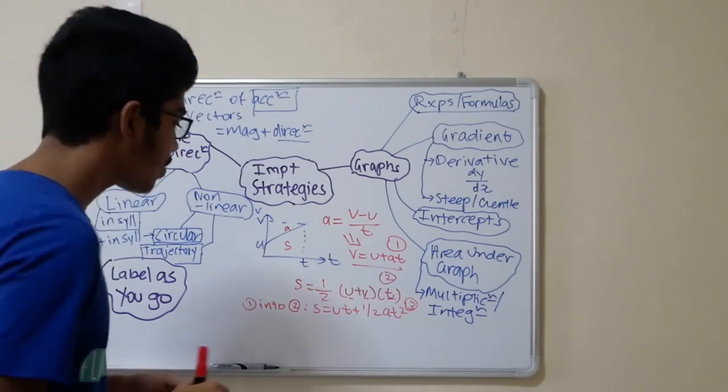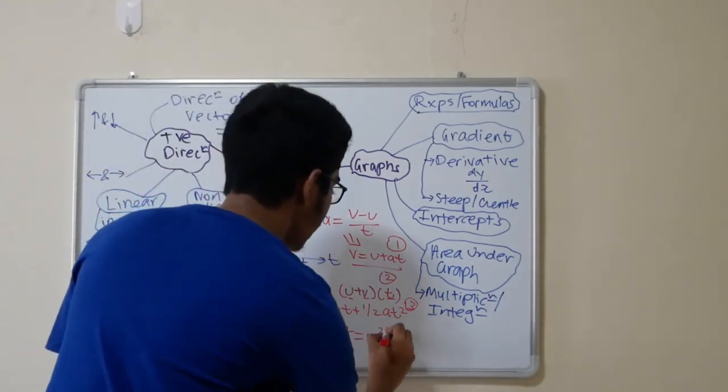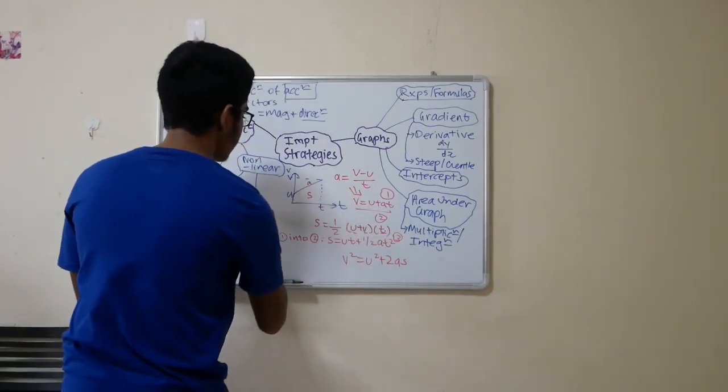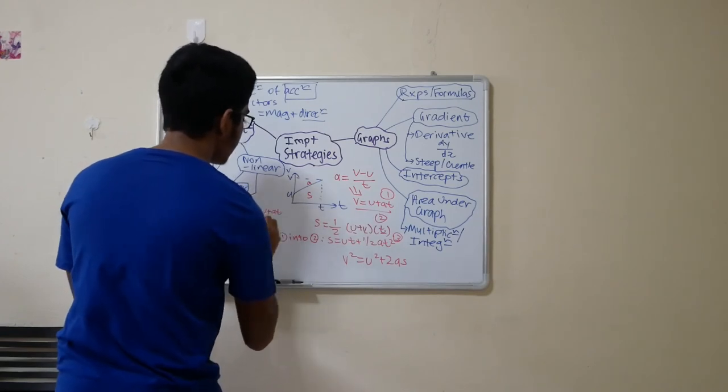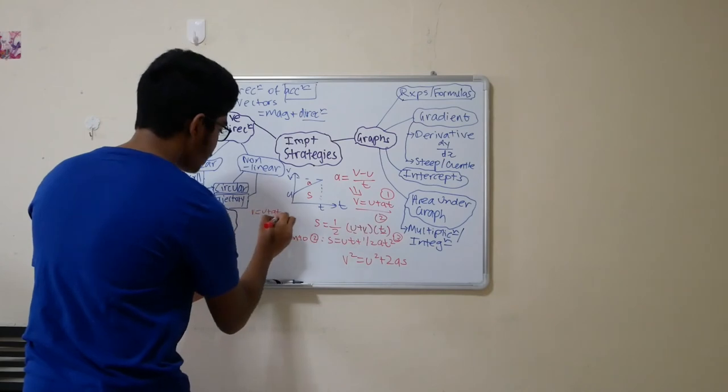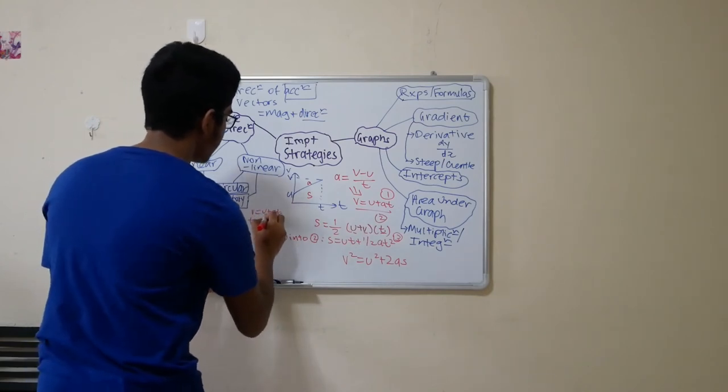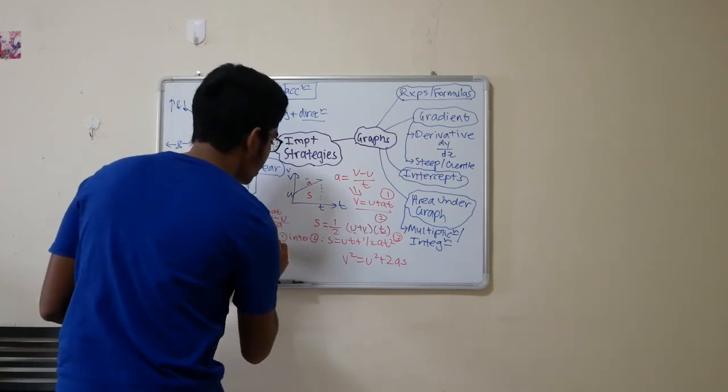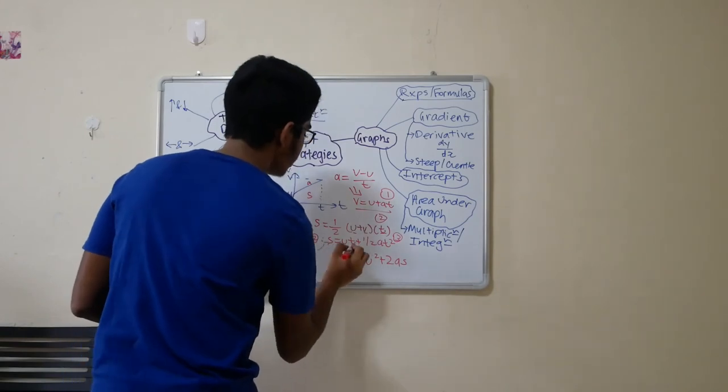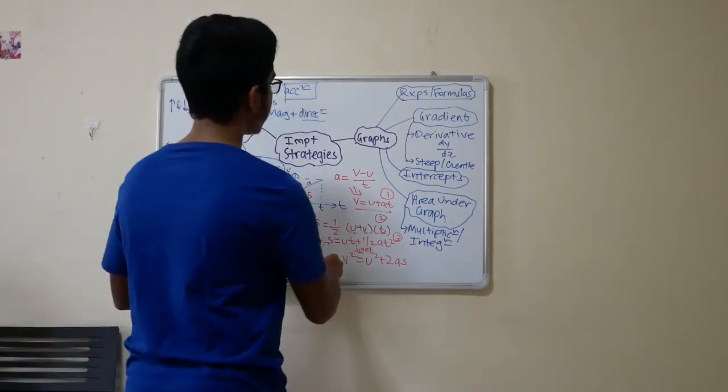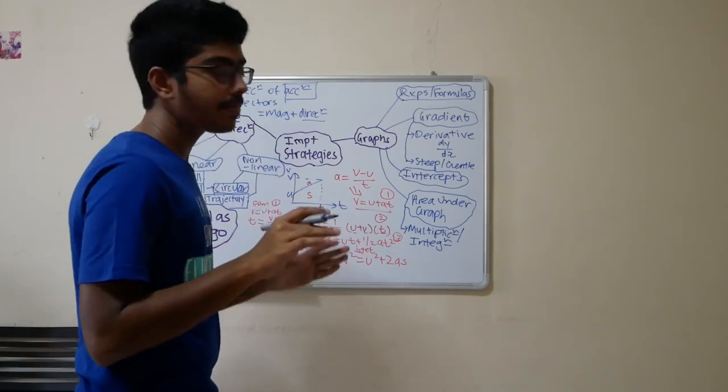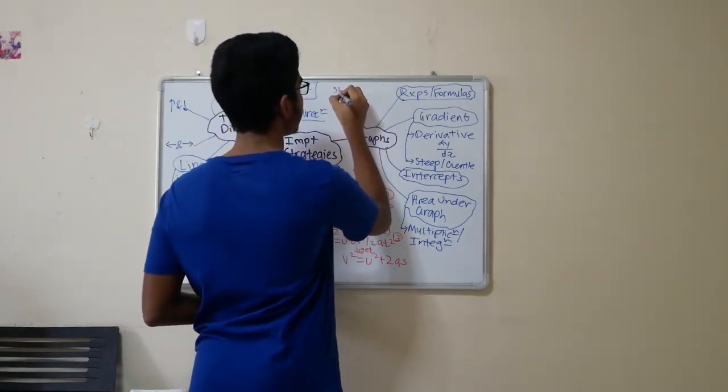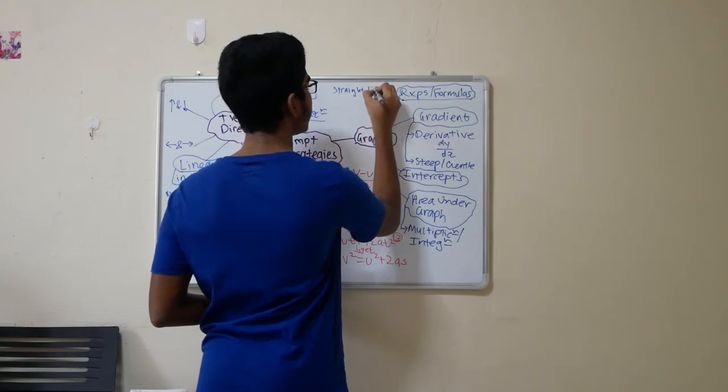Now, how do you get the last formula? What is the last formula? v square is equal to u square plus 2as. What you do is just manipulate the first equation. So, v is equal to u plus at. You change this. And so, you make t the main head of the equation. If you alter it, you become v minus u over a. You substitute this thing in this equation. You will get this equation.